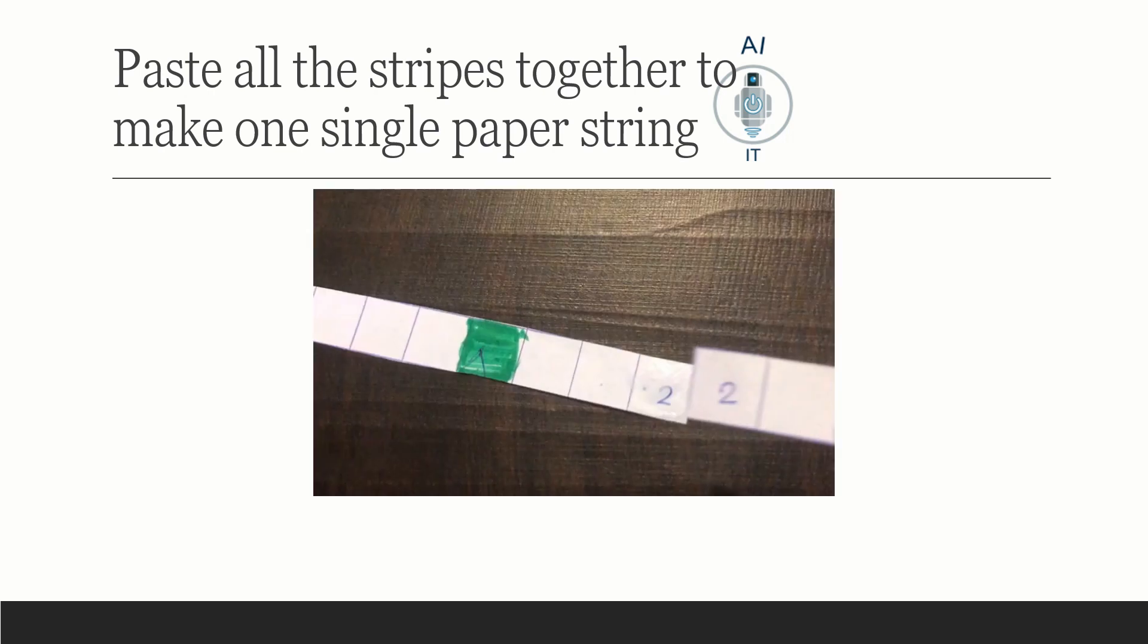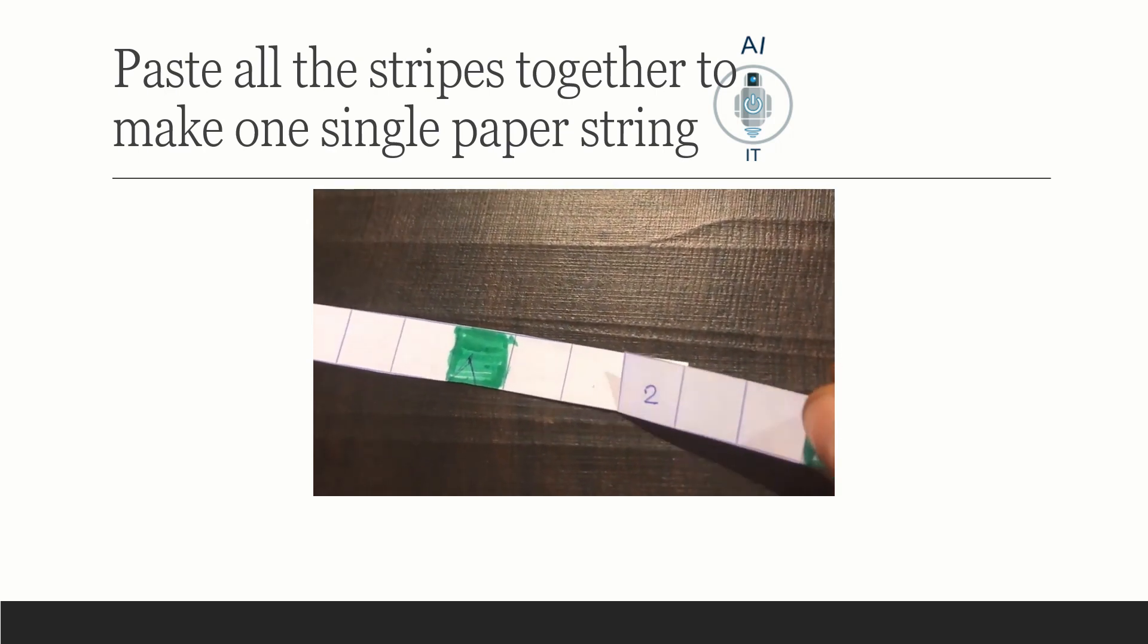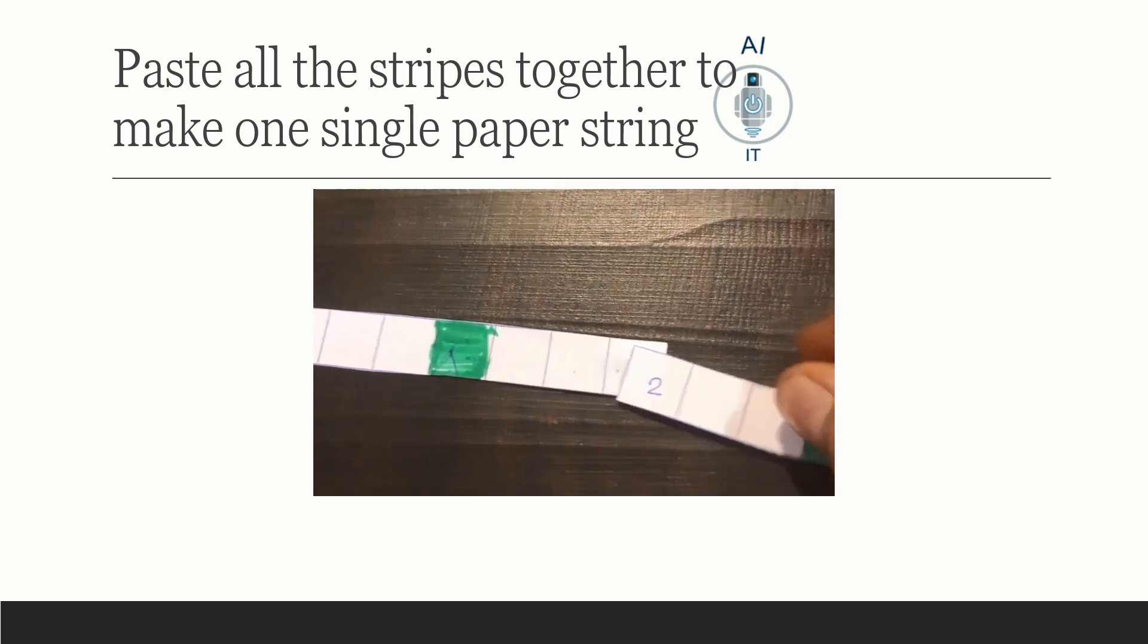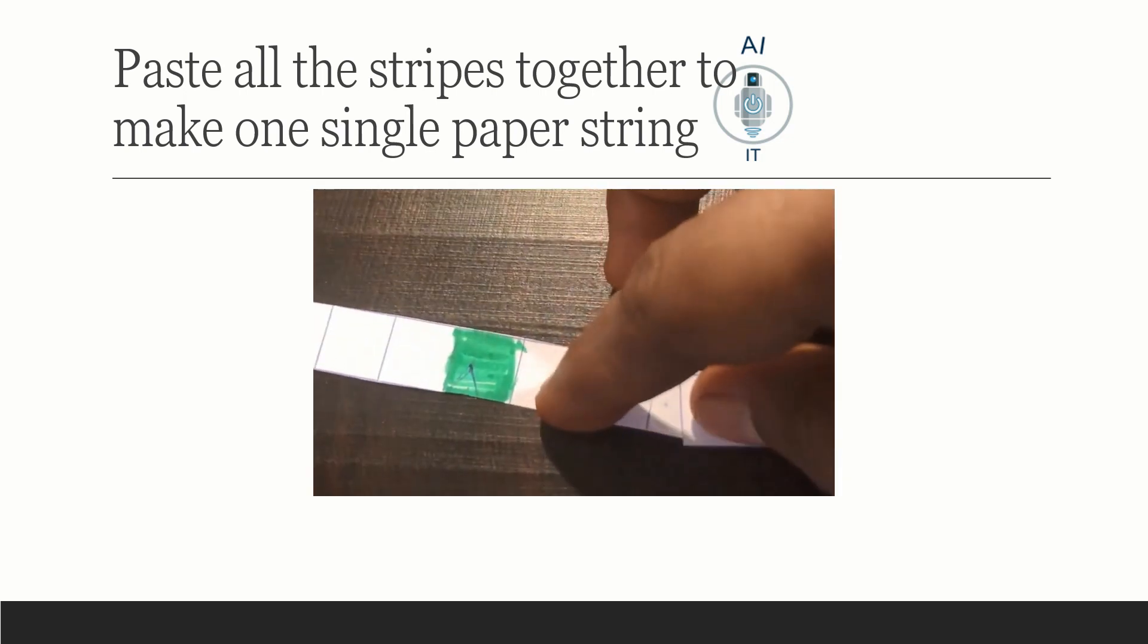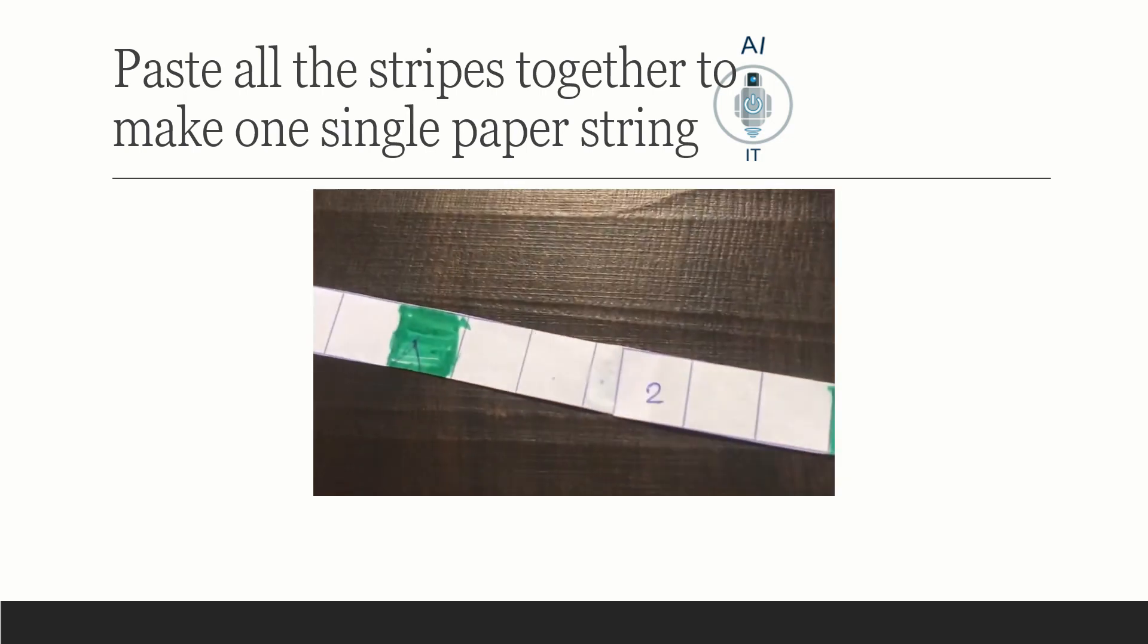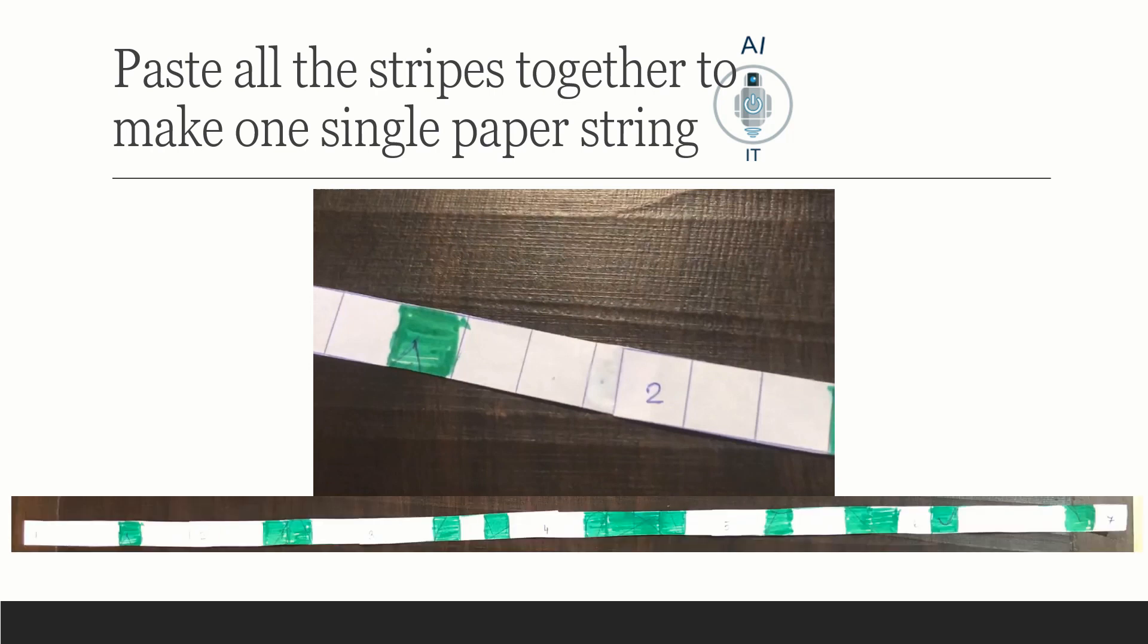So I am pasting here 1 to 2 with 2 to 3. Apply glue on the number 2 in the first strip and attach the next one so that we get a horizontal string. This way we can repeat it for the remaining numbers and get a strip which is like this.